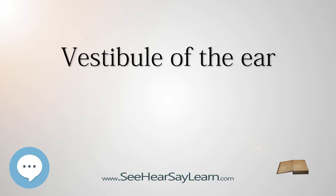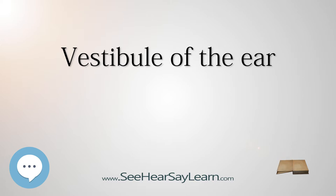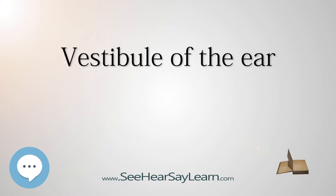This ridge bifurcates below to enclose a small depression, the fossa cochlearis, which is perforated by a number of holes for the passage of filaments of the acoustic nerve which supply the vestibular end of the ductus cochlearis. The orifice of the aqueductus vestibule is in the hind part of the medial wall; it extends to the posterior surface of the petrous portion of the temporal bone. It transmits a small vein and contains a tubular prolongation of the membranous labyrinth, the endolymphatic duct.